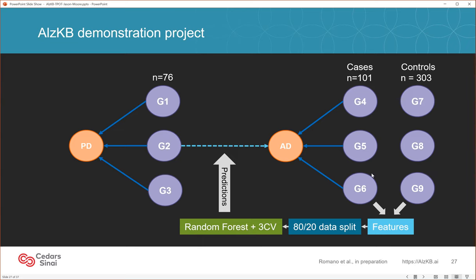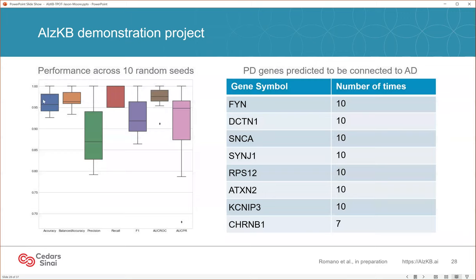Once we had a model of what makes a gene an Alzheimer's gene based on its graph properties, we looked at the 76 PD genes from GWAS and asked: based on our model, which of these are predicted to have a link with Alzheimer's disease? We did this across 10 different random seeds. The accuracy was about 95%, the balanced accuracy was better than 95%, and the area under the ROC curve was better than 95% — very good performance of our machine learning algorithm on the holdout data across 10 random seeds.